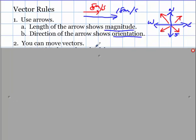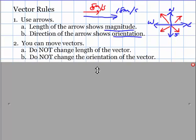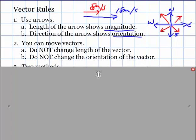The next thing is we can move vectors. This is good news for us. It really helps. But if you do move a vector, you do not change the length, nor do you change the orientation of the vector. Because the length and the direction are shown by the arrow, you can't change either one of those if you move it.